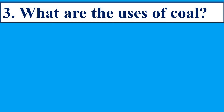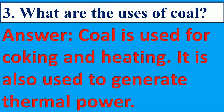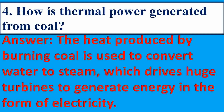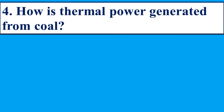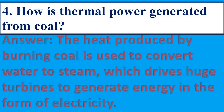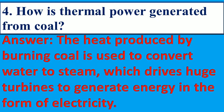What are the uses of coal? Answer: coal is used for cooking and heating. It is also used to generate thermal power. Next question: how is thermal power generated from coal? Answer: the heat produced by burning coal is used to convert water to steam, which drives huge turbines to generate energy in the form of electricity.